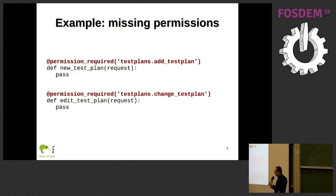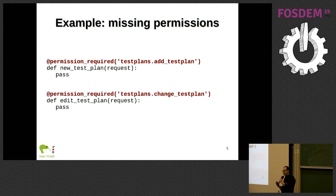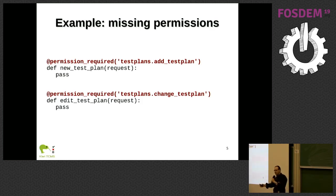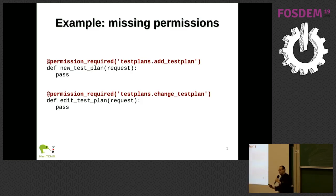Another example: we use Django Simple History to keep track of changes to objects, and it works with model save. If you use objects.update or bulk_create, this doesn't use the save method, so history is skipped — we don't like these methods. We also have a missing permissions use case. In a legacy project, we had views missing the permission_required decorator. We created a PyLint plugin to find all such places, and if a new view is added without permissions, the plugin will catch it.